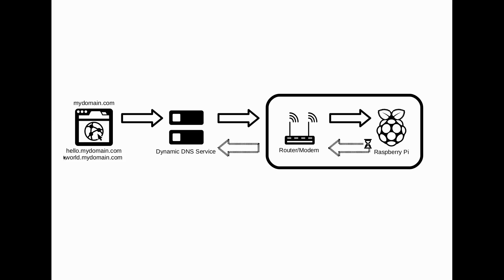In this case, hello.mydomain and world.mydomain.com. You're running a few services on your Raspberry Pi, and to get to those services — such as SSH, your own cloud, or a web server — you use a service. In this case I use noip.com, to dynamically check when your router's IP address has changed and then automatically update the DNS record.